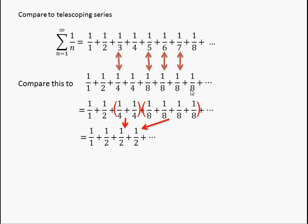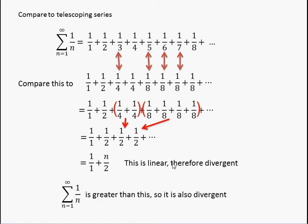And so, this series that we've just made up is the sum of 1 plus n over 2. That series is linear, therefore it's divergent. It just keeps growing. Our harmonic series is bigger than this. 1 third is bigger than a quarter. 1 fifth is bigger than an eighth. It's bigger than a divergent series, so it's also divergent.